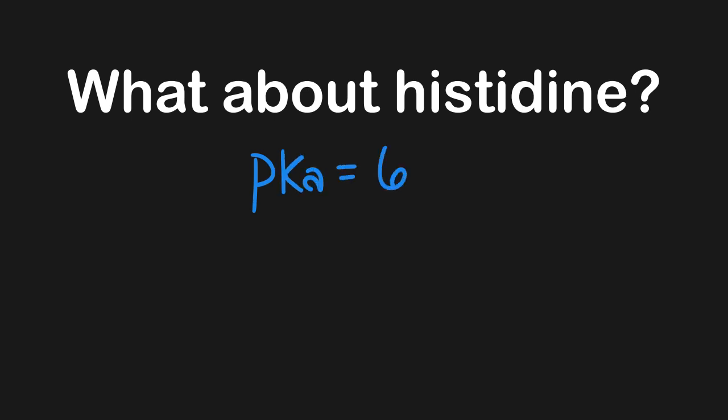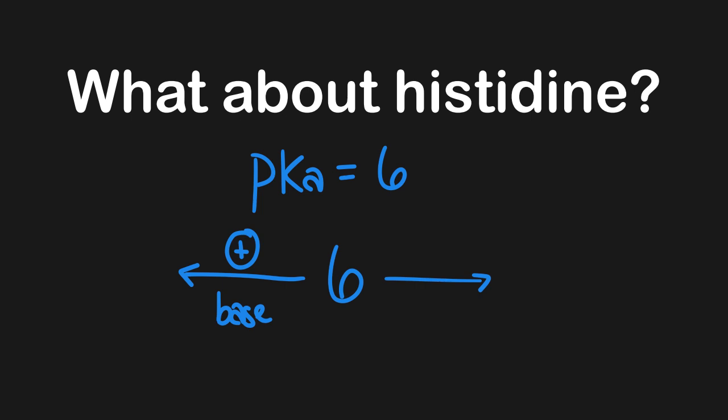Now let's talk about one exception: histidine. Histidine is often grouped with the basic amino acids and can be positively charged, but its pKa is actually 6. This means that below a pH of 6, histidine acts as a base and gains a positive charge. However, if the pH is greater than 6 — which is often the case — it deprotonates and becomes neutral. So we generally shouldn't include histidine in our DIRK mnemonic, since most questions involve physiological pH above 6.